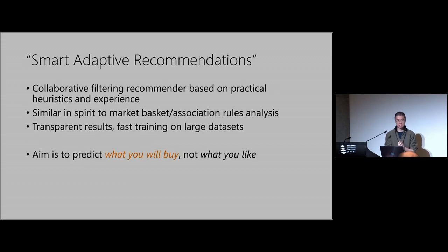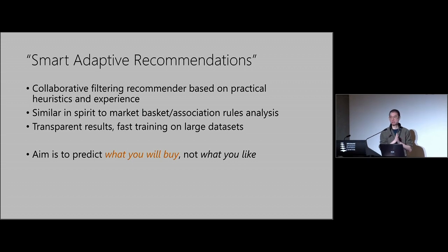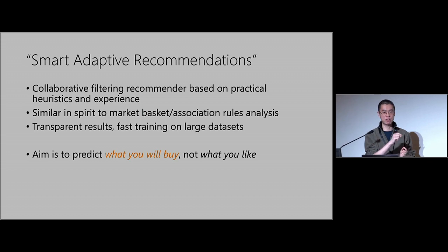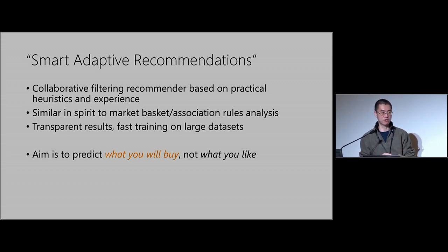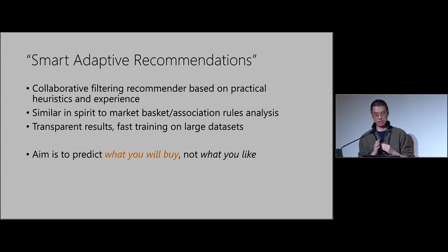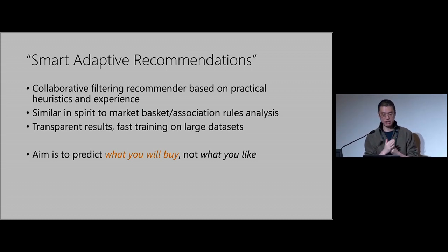So basically, what is a recommender? If you don't know what a recommender algorithm is, it's like when you go to Amazon or JB Hi-Fi — it'll say 'people who bought X also bought XYZ,' or 'people who liked this movie also like XYZ.' Smart Adaptive Recommendations is basically a collaborative filtering recommender based on practical heuristics and experience.